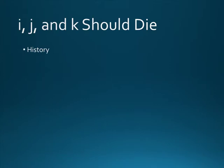My understanding of the history of I, J, and K as common variables we use in programming is that the practice started in Fortran. There are two reasons why Fortran programmers did this. Since Fortran is primarily a math language, I, J, and K were used in math, and so the practice was carried over into Fortran and from there into other languages. Fortran encouraged this by also automatically declaring I, J, and K as integers, so using I, J, and K made the code slightly easier to write and seemed to be considered a best practice at the time.